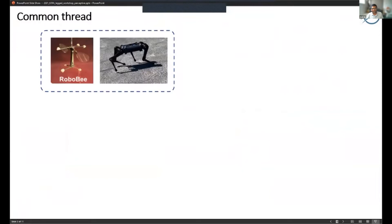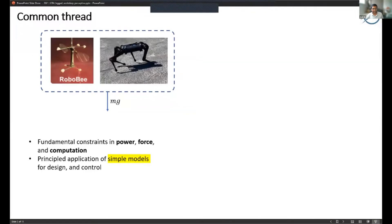The common thread I want to highlight for all of these projects is that basically all of these mobile robots have to support their own mass and their own computation. There are fundamental constraints in power, force, and computation, and how much mass each of those entail. Managing these and optimizing our designs and algorithms has been the focus of my career.